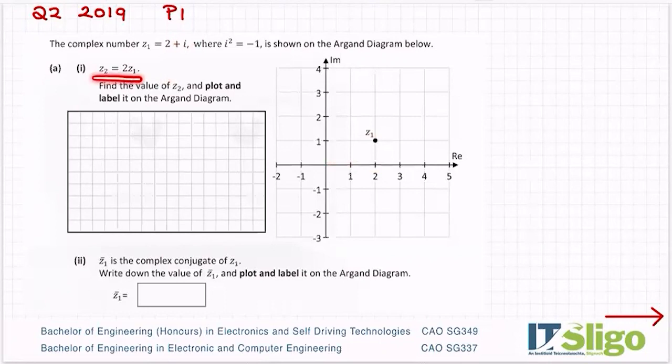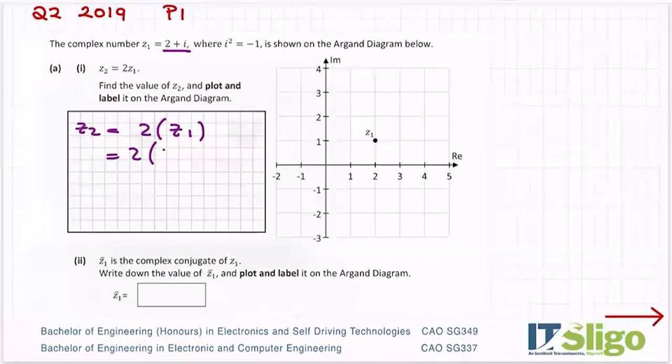Part 1: Z2 is equal to 2 times Z1. So it's 2 times 2 plus i. Let's multiply it: 2 times 2 is 4, 2 by i is 2i. Just the same as you multiply 2 times 2 plus x, it's the same maths, just in a different context. So Z2 is the number 4 plus 2i. Find the value and plot and label it on the Argand diagram. So 4 plus 2i would be here, and that's my Z2.